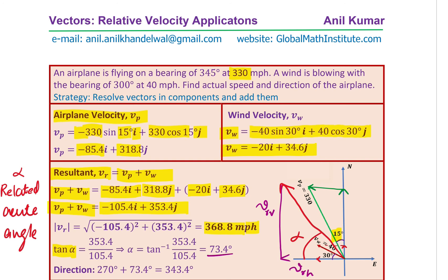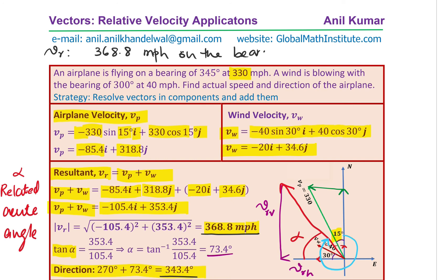From north, the solution is that we add this to 270 degrees to get our answer. So the direction is 270 plus the related acute angle 73.4, which gives us 343.4 degrees. So that becomes the direction of the plane. So the answer is a magnitude of 368.8 miles per hour and the direction is a bearing of 343.4 degrees. The resultant is 368.8 miles per hour on the bearing of 343.4 degrees.